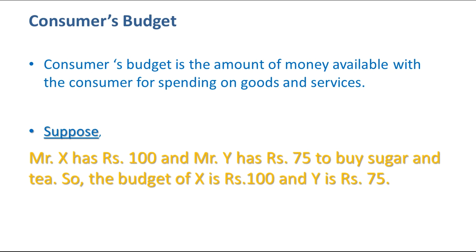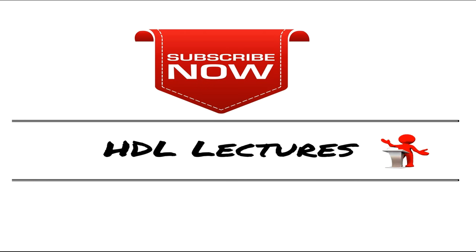Suppose Mr. X has rupees 100 and Mr. Y has rupees 75 to buy sugar and tea. So the budget for X is rupees 100 and the budget for Y is rupees 75 — that is what consumer budget is.